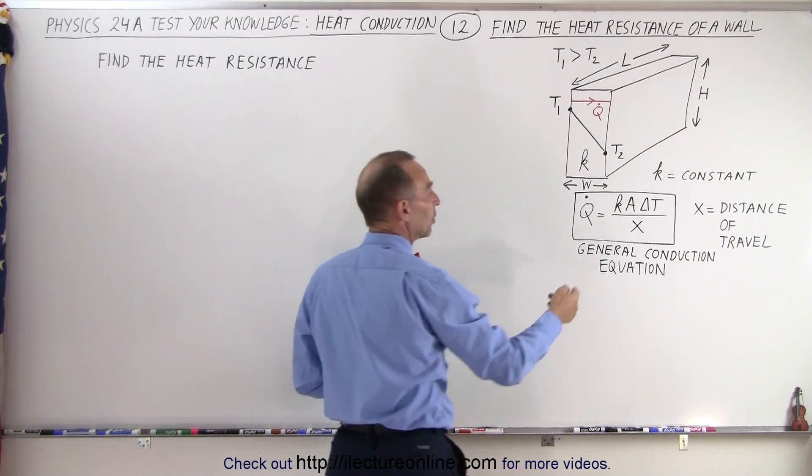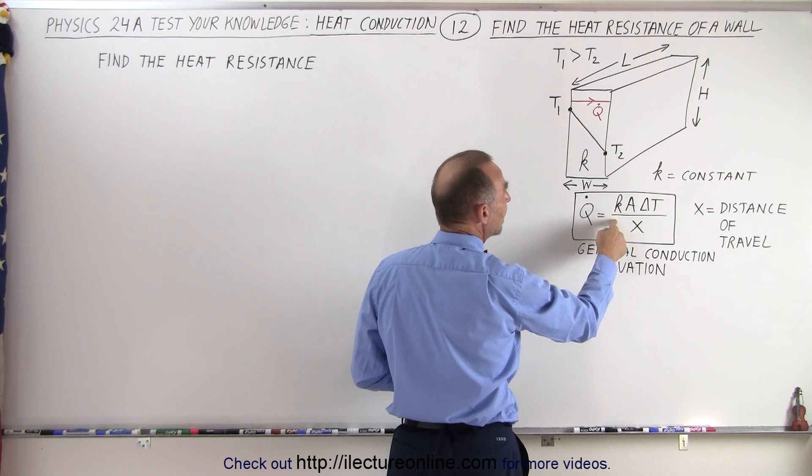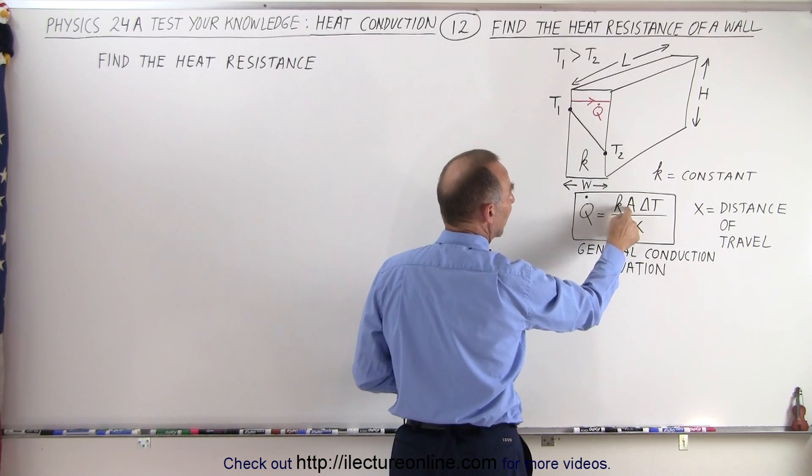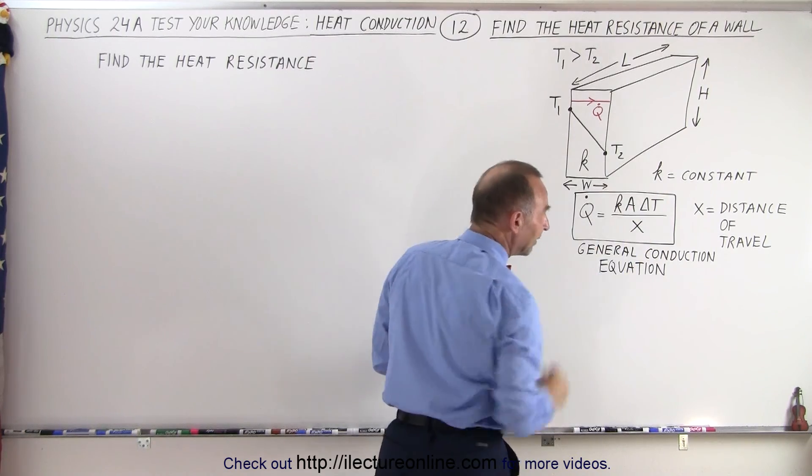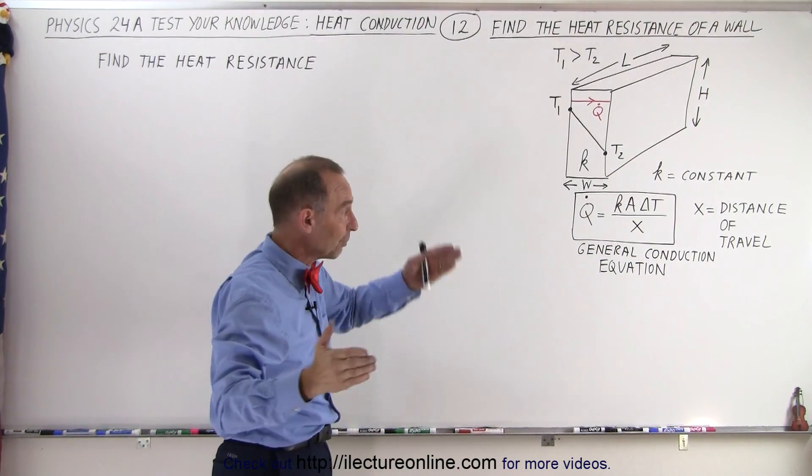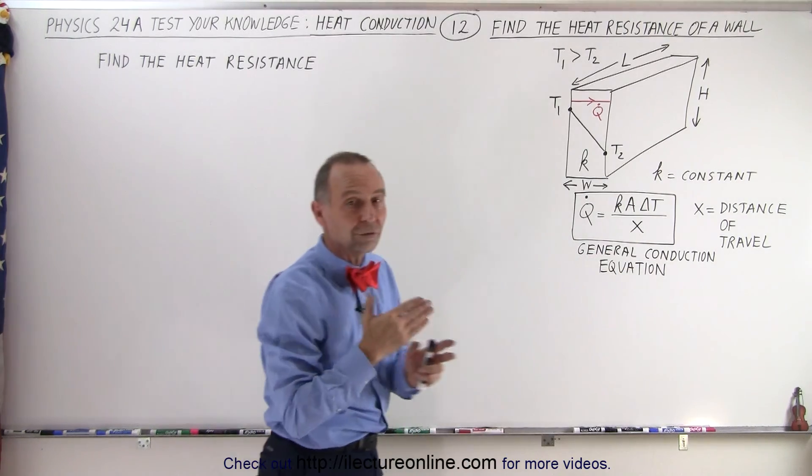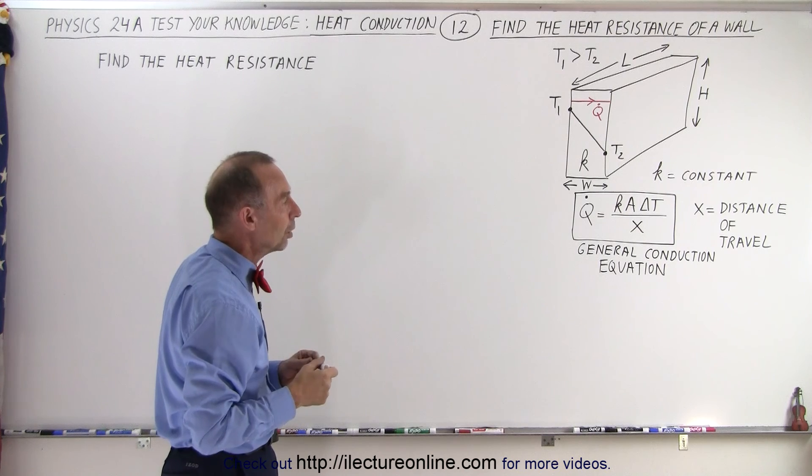The general equation of heat conduction is KA delta T over x. K is the conductivity constant. A is the cross-sectional area through which the heat travels. Delta T is the difference in the temperature from one side to the other side. And x is the distance of travel for the heat. In this case it would be the width of the wall.